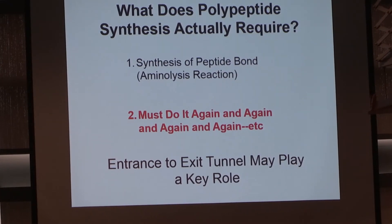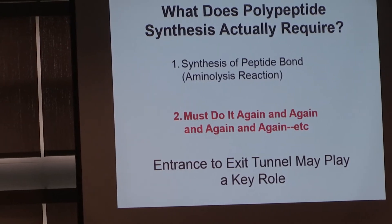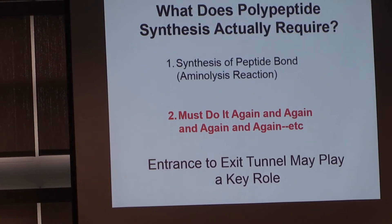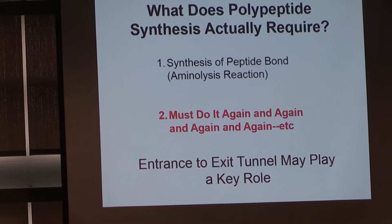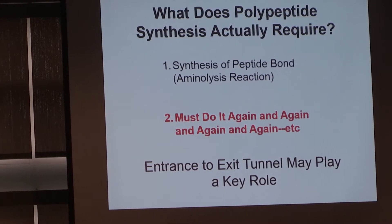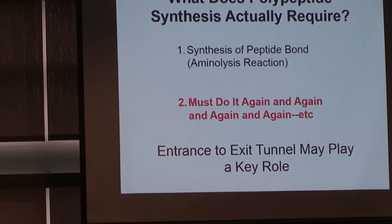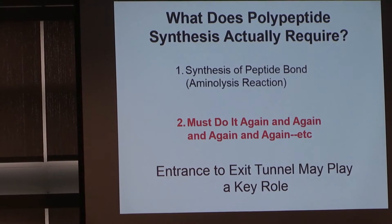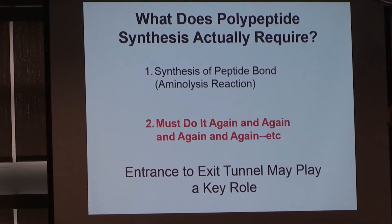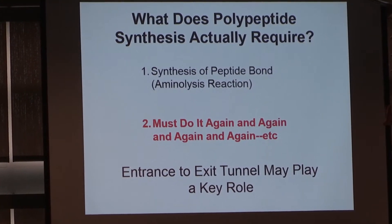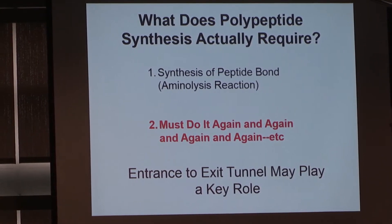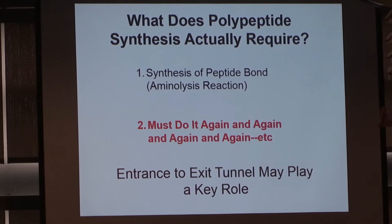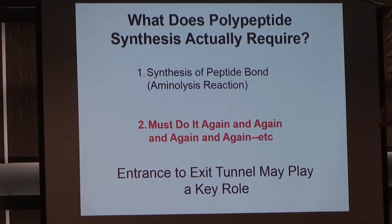The question is: when does polypeptide synthesis actually require? It turns out there are two aspects to it, and this seems to be overlooked a lot by the 'origin of life' people. One is you have to be able to synthesize the peptide bond — but that doesn't solve the problem. You also have to do it over and over again in order to make something useful in size. So you have two aspects to it, and they're rather different.